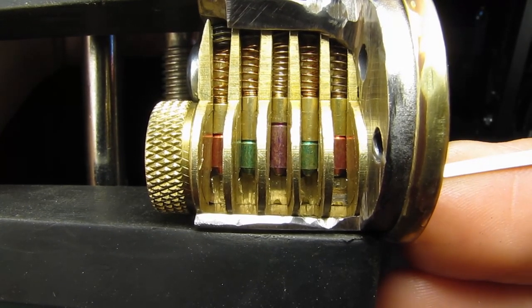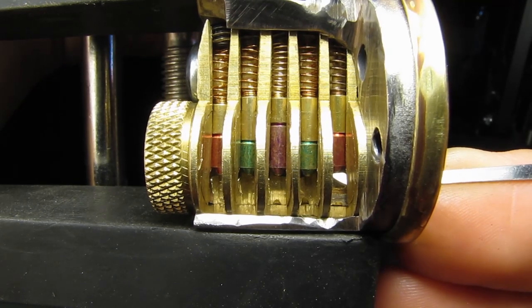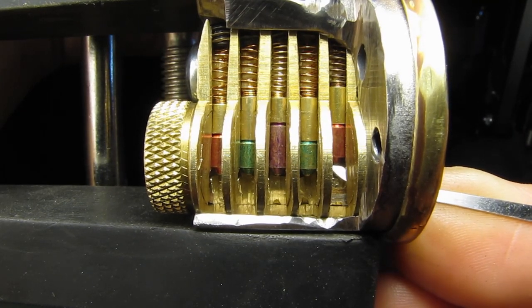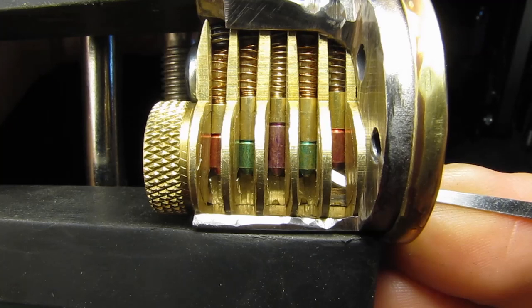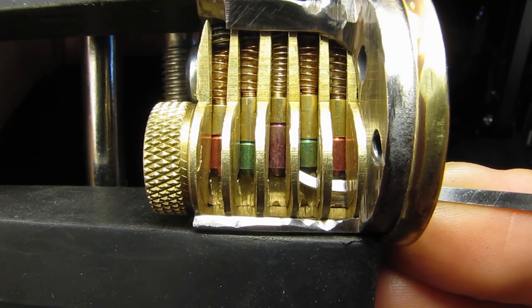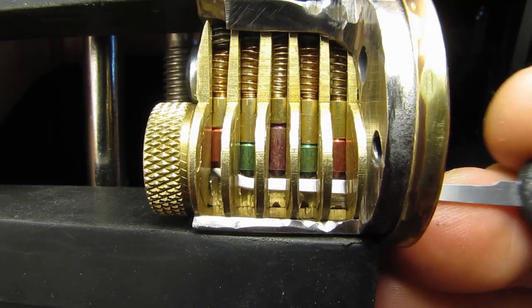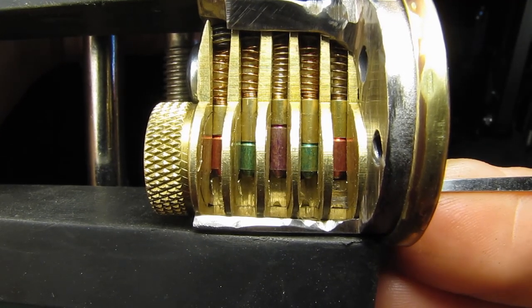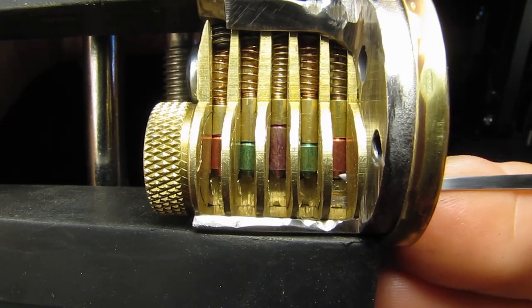And another way to get used to feeling the pins is to come in from the front, get under the first pin, lift it up, and then ram into the next pin. Dip down, lift up, ram into the next one, dip down, lift up. That's a good way to count pins to figure out where you're at in the lock.